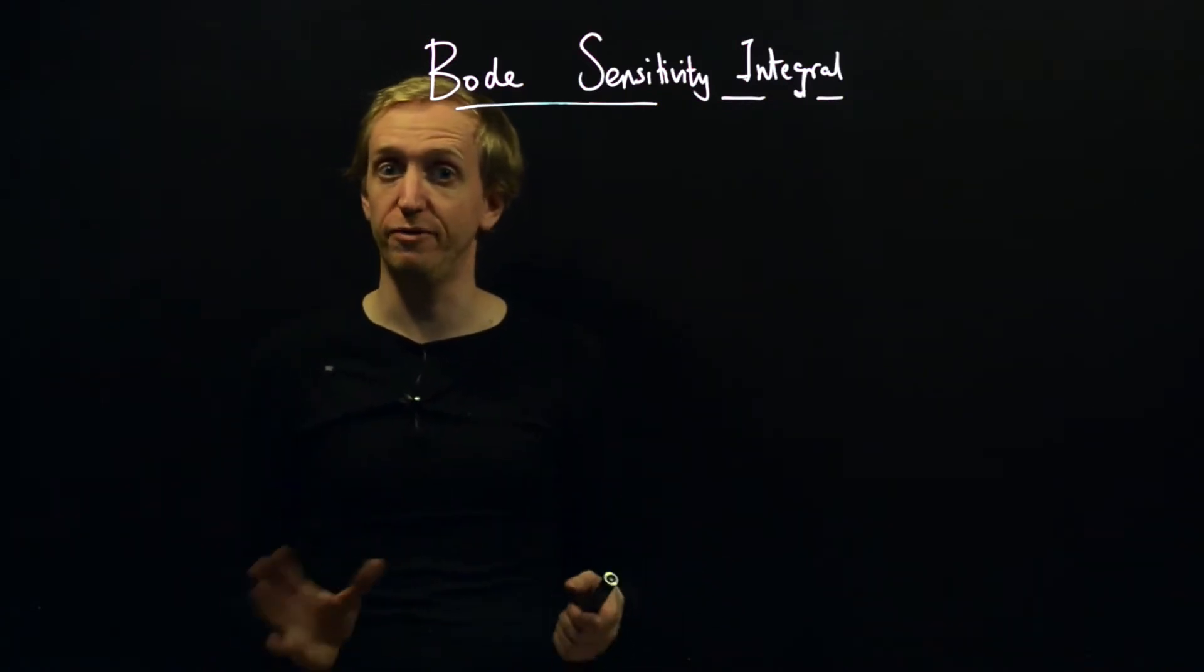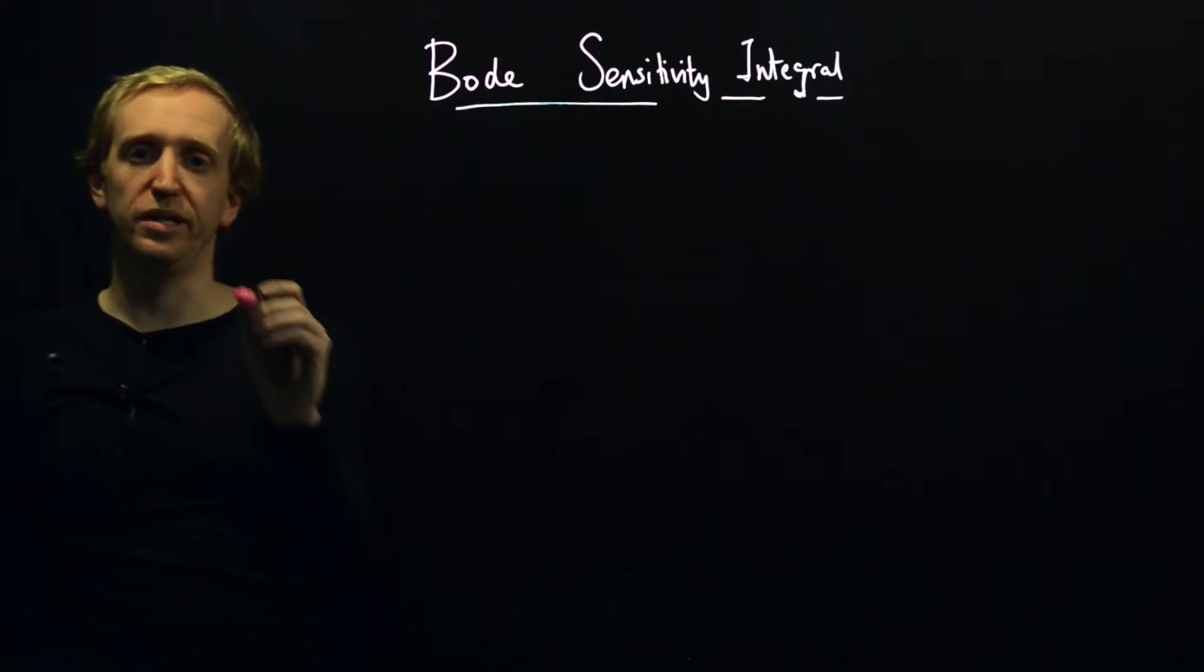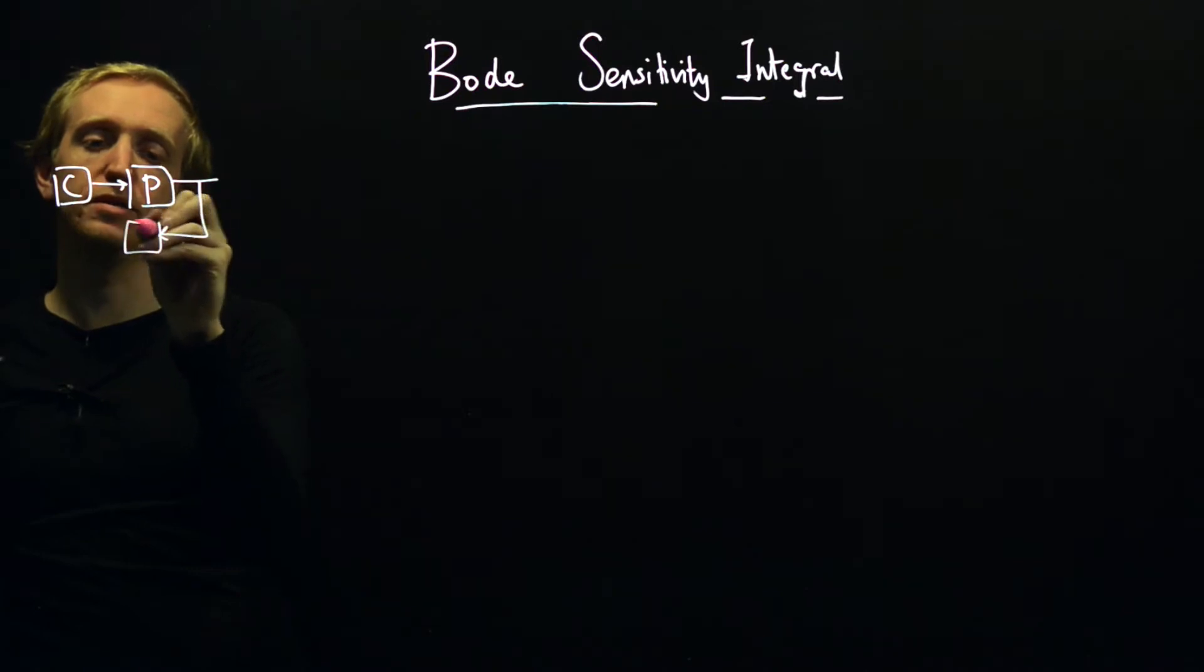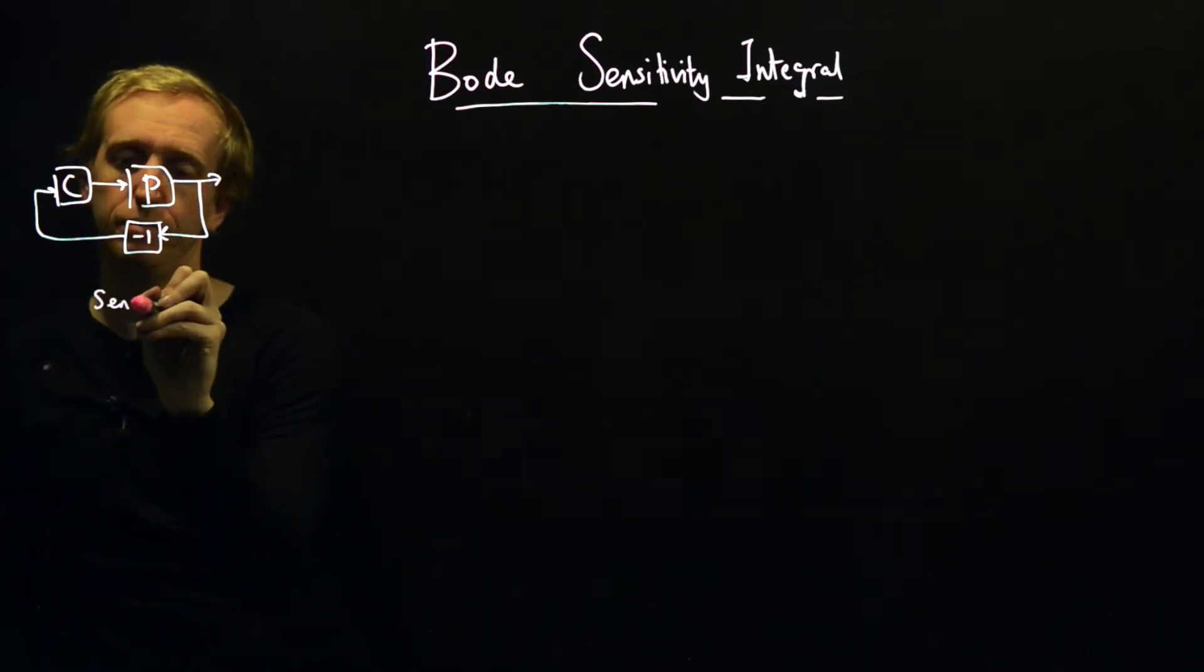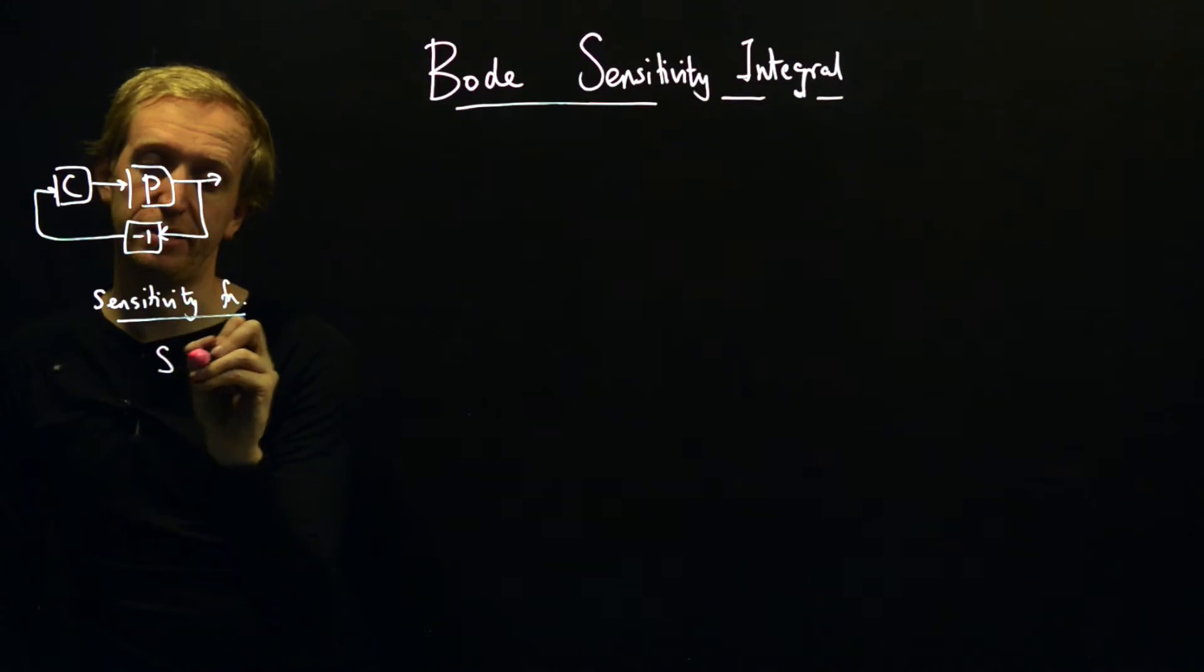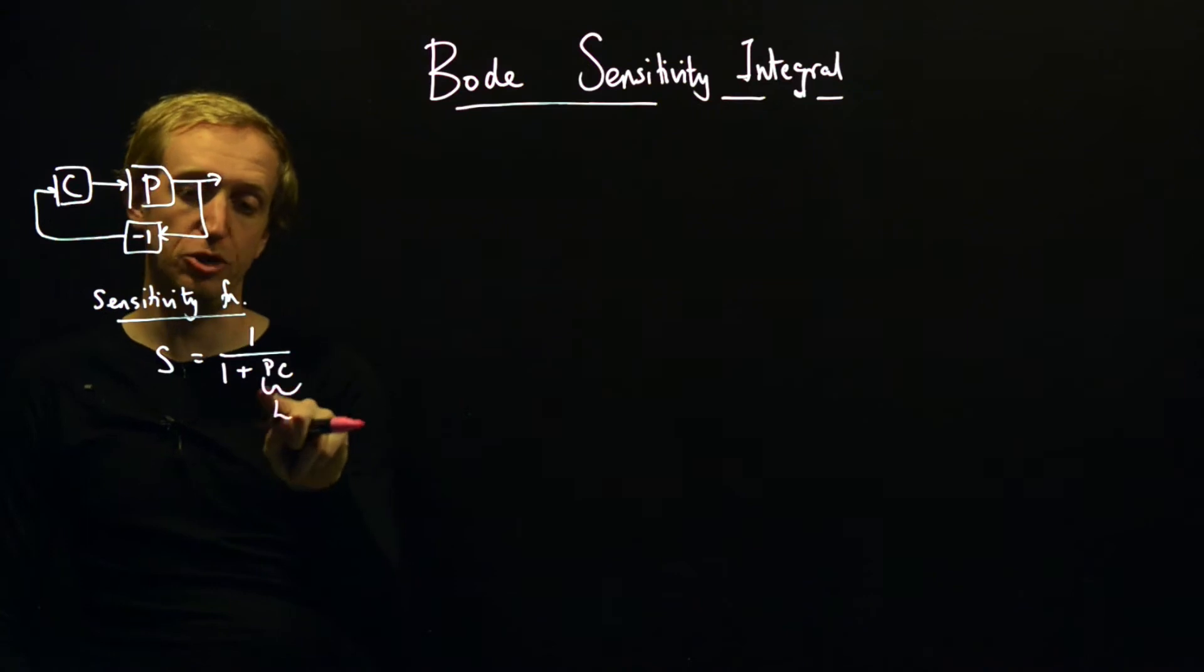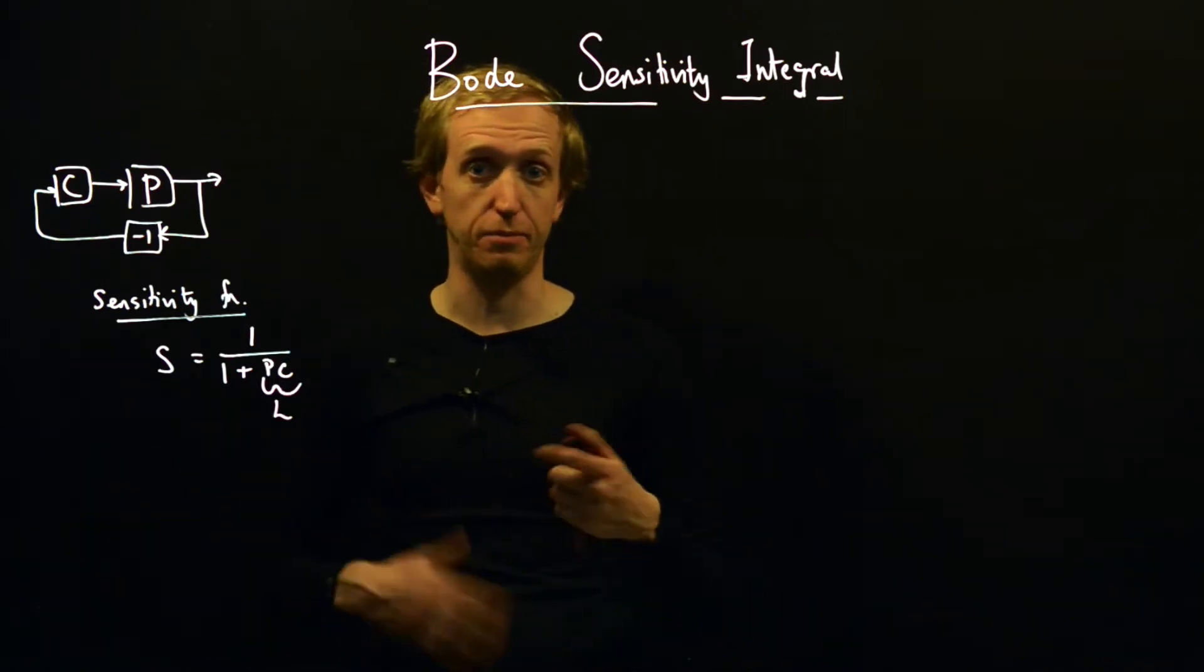So in order to explain what it is, let's remind ourselves what we're talking about. We have some setup where we have a controller and a plant in negative feedback, something like that. And the sensitivity function - sensitivity - was just this transfer function S which is equal to 1 over 1 plus PC. And PC, this was what we were calling L or our return ratio.